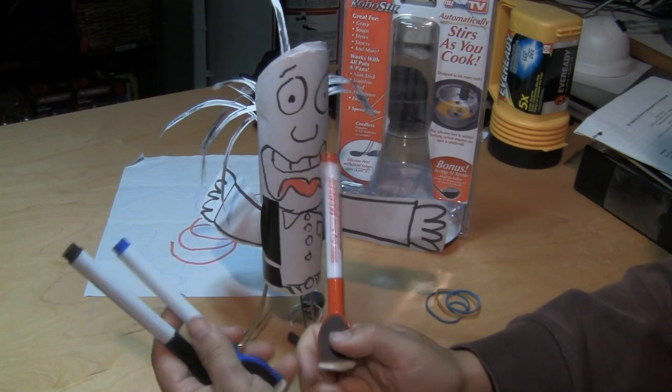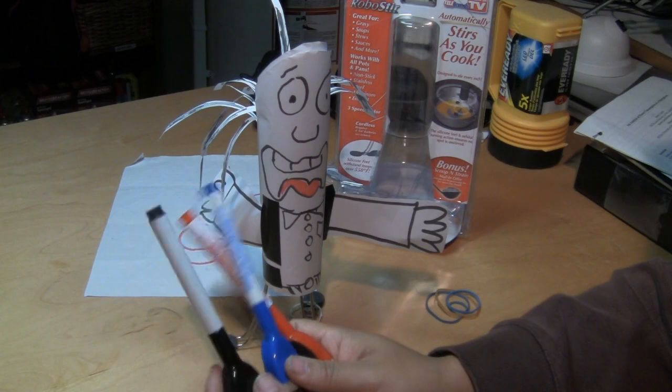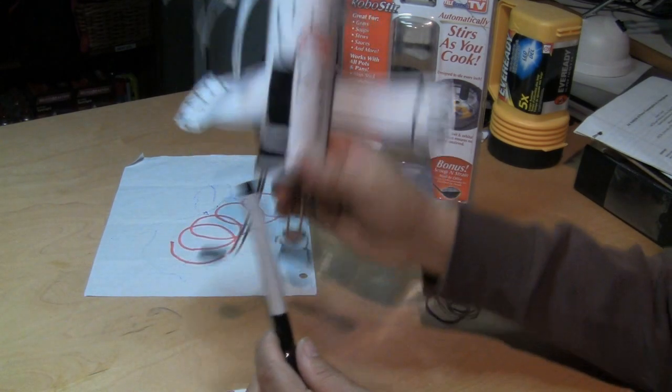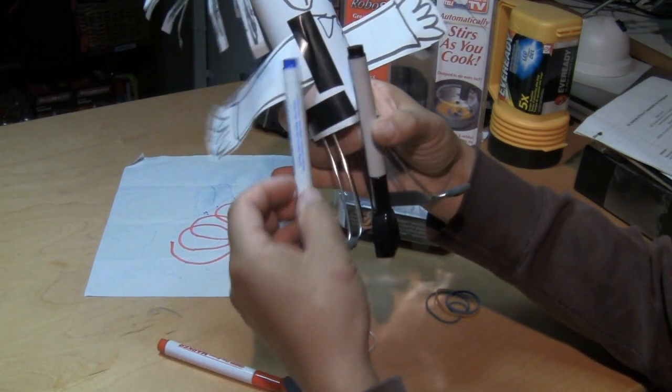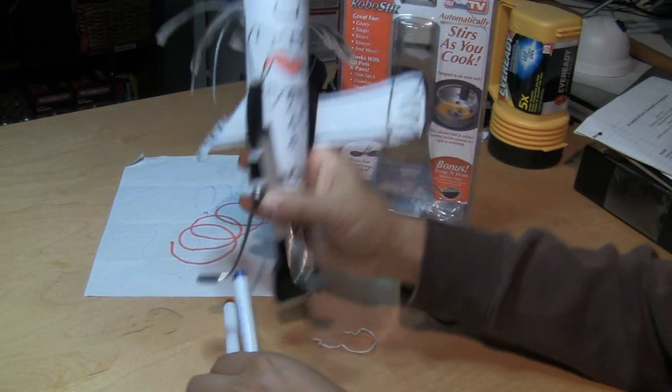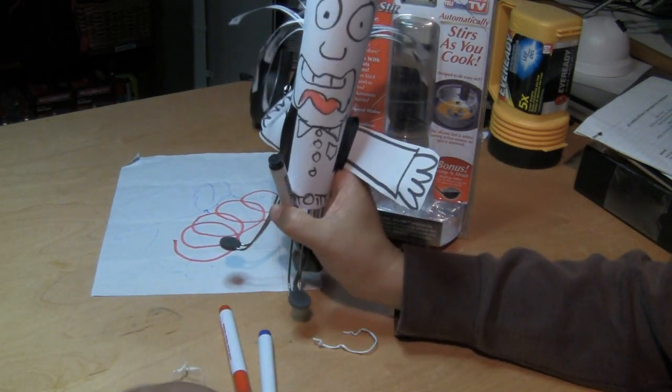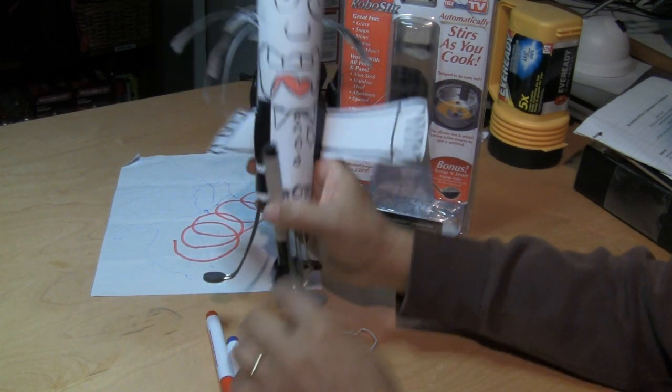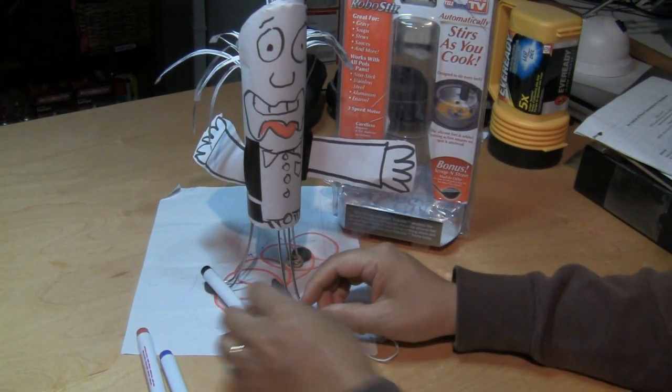So what you need is a dry erase marker. A different color would be preferred. And what we want to do is put it along his three legs. So one here, one here, and then the other one on the other side. And of course you would need an elastic band, and then several elastic bands to tighten up the dry erase marker onto the foot. And we're going to start doing that right now.